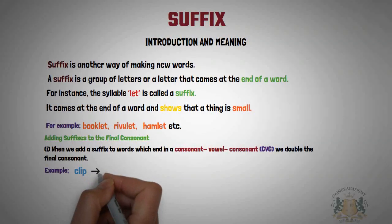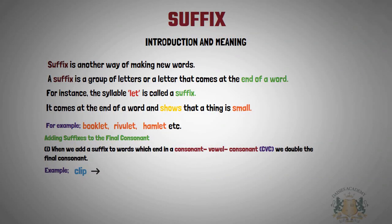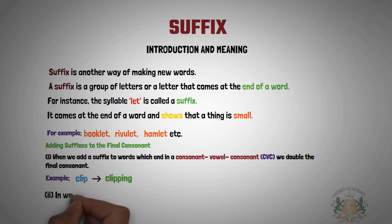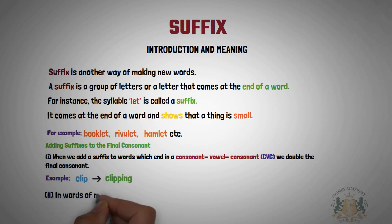For example, we have 'clip': consonant, then the vowel 'i', then the consonant 'p'. To add a suffix to it, you have to double the last letter 'p' before adding '-ing', giving you 'clipping'.